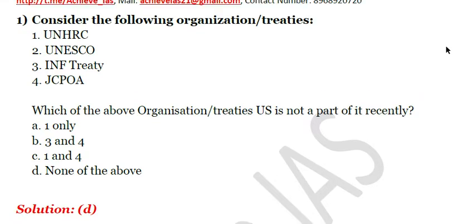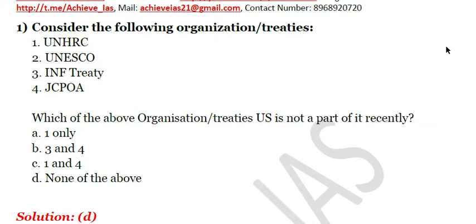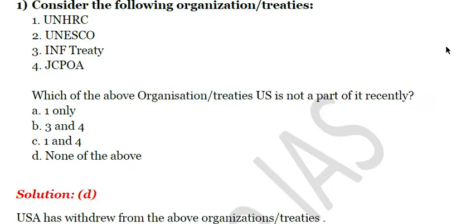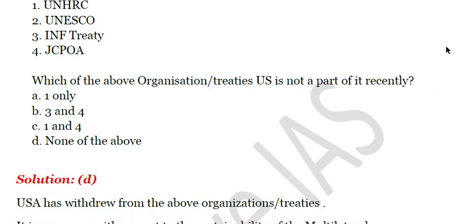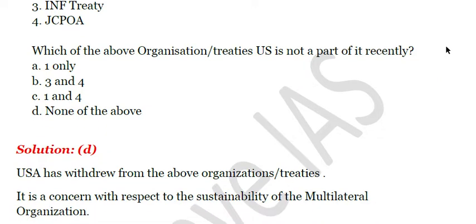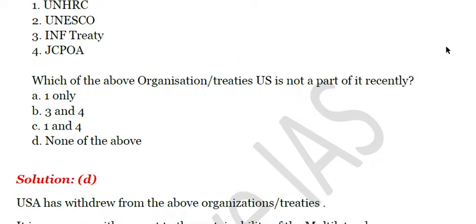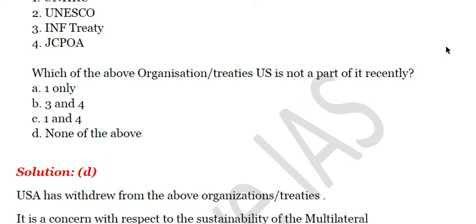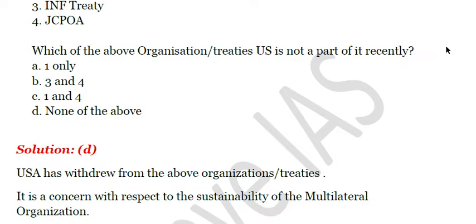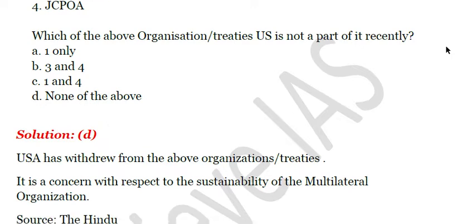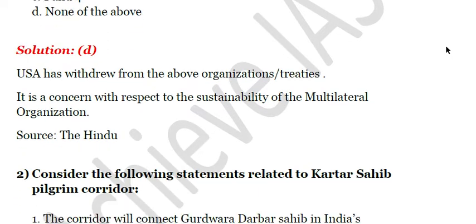The US withdrew from the United Nations Human Rights Commission citing concerns that it is biased against Israeli people. The Intermediate Nuclear Forces Treaty between Russia and the USA was withdrawn by the US unilaterally. And JCPOA, the nuclear deal between Iran, the US and its allied powers — the US has also withdrawn from its obligations in that treaty. So the answer is D, none of the above.